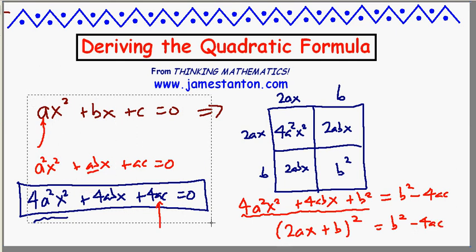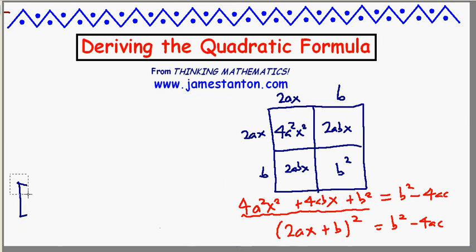Well, now we're there. Let me just give myself some more space. So we now have that something squared, this quantity squared, is given by this number. Well, that means 2ax plus b itself is the square root of b squared minus 4ac. It could either be the plus version or could be the negative version.